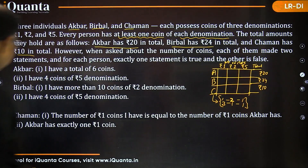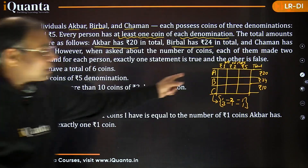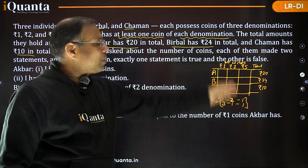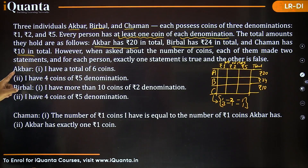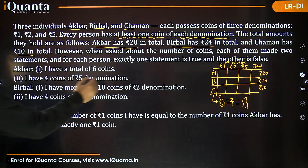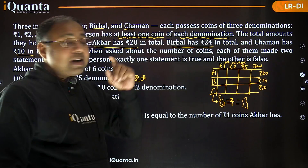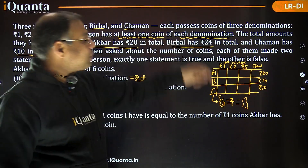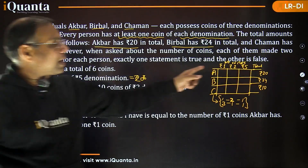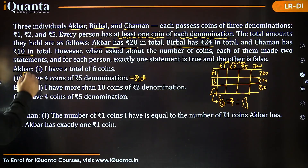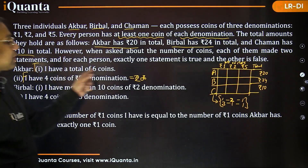Let's look at the statements. First, Akbar says: 'I have a total of six coins.' Second statement says: 'I have four coins of ₹5 denomination.' Four coins of ₹5 would be ₹20 total, but every person must have at least one coin of each denomination — that would leave zero coins for ₹1 and ₹2, which is invalid. So the second statement by Akbar is certainly false.